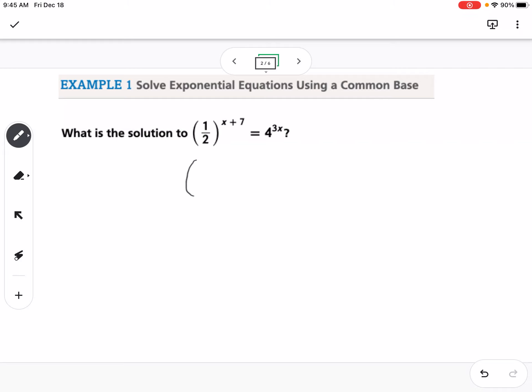Instead of one-half, that would be 2 to the negative 1 power raised to the x plus 7, and then 4 we know is just 2 squared raised to the 3x.